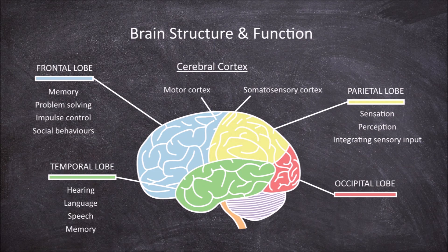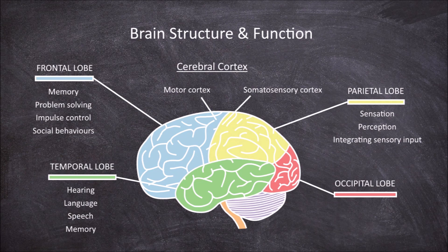The last lobes are the occipital lobes. These are found at the back of the brain. The main functions of the occipital lobes are in vision and processing visual information.